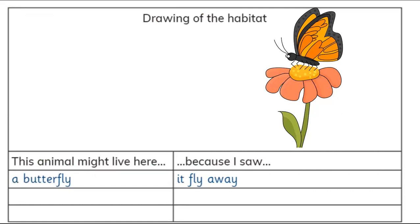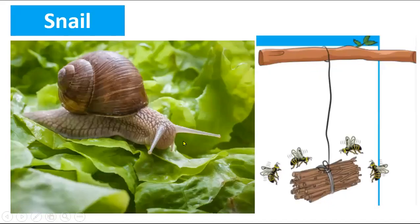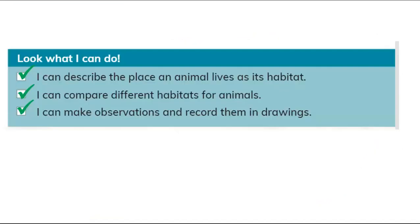In the activity, we learned that a butterfly might live here — the clue is it flies away. You draw a butterfly on the flower to show this is its habitat. We also talked about snails eating leaves, and how bees find their food. When an animal finds good food, water, and air, it means it has found a good habitat.